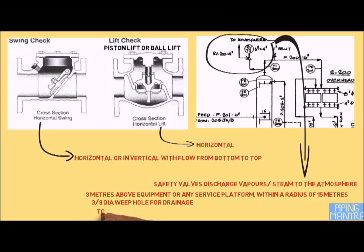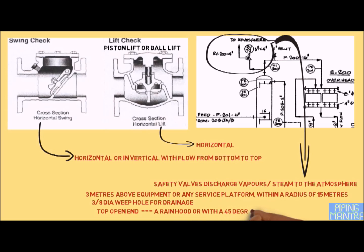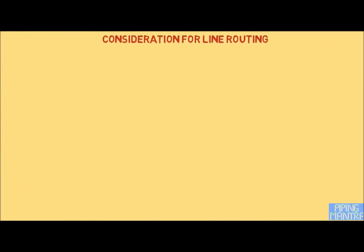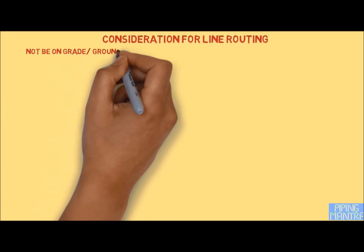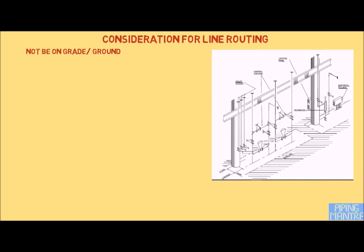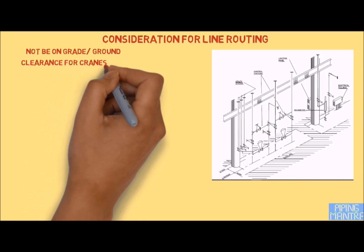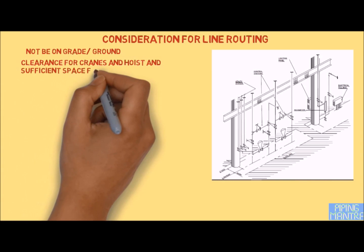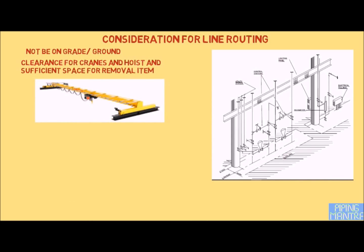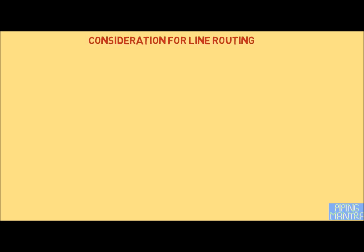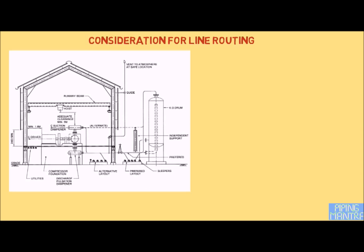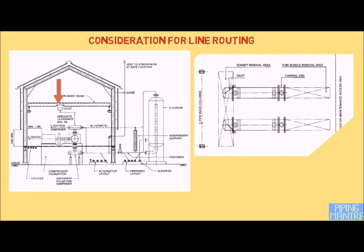For all safety valve discharge lines, the top end should be provided with a rain hood to prevent rainwater accumulation, and a bird screen or a 45-degree elbow cut at the open end should be provided to prevent birds from entering. Piping should not be routed at grade level wherever frequent movement occurs. Piping should have clearance for cranes and hoists, and sufficient space for removal of equipment. Provision of lifting devices such as davit sockets or chain-pulling blocks should be made for valves weighing more than 45 kg.